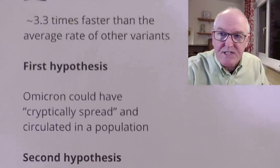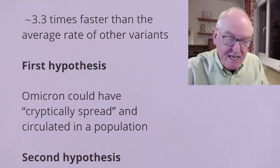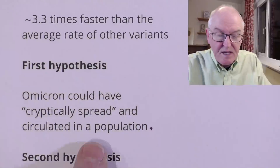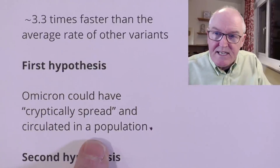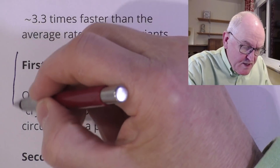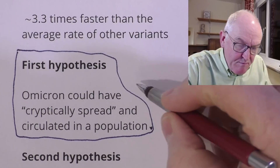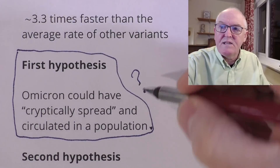The first hypothesis is that Omicron could have cryptically spread and circulated in a population with low levels of testing. Did it originate in an African population where people simply were not tested? It grew and evolved in people but was never discovered. It's possible, but that doesn't explain why the mutation rate was particularly high.